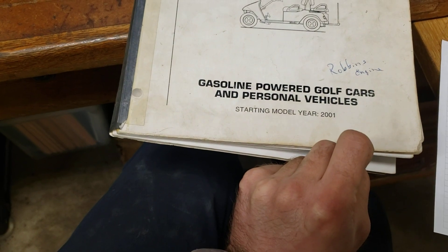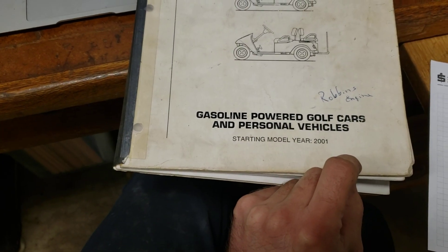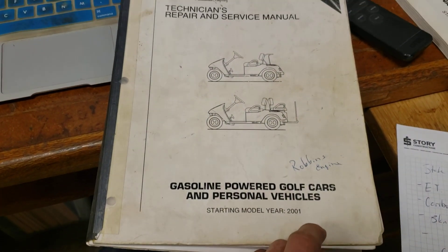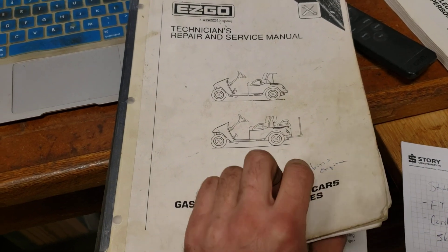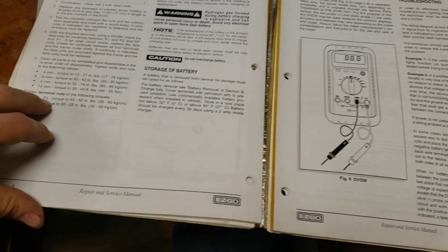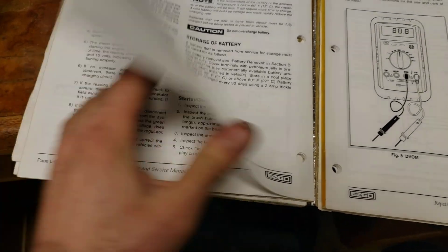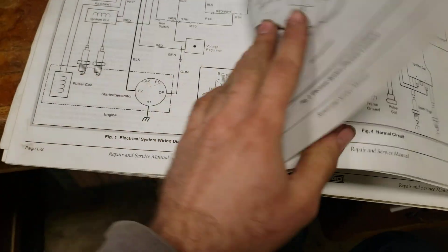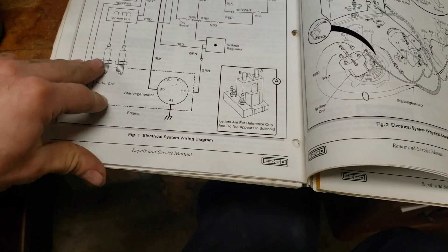This is a supplement to the EasyGo video, and this is for a 2001 Robins engine in particular, but it should relate to anything roughly in that era. So I'm going to flip back here.